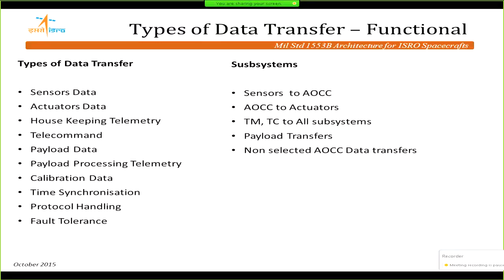We looked at the types of data transfer — there are varied requirements: sensors, housekeeping, telecommand, payload systems. Some payloads in the order of 200 kbps were accommodated on the 1553 bus. Protocol handling with mode codes was added. Subsystems include all payloads, sensors, actuators, and the non-selected AOCS system must be kept in tandem with all required transfers.